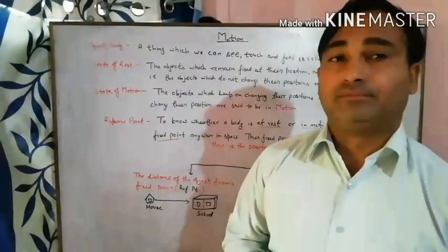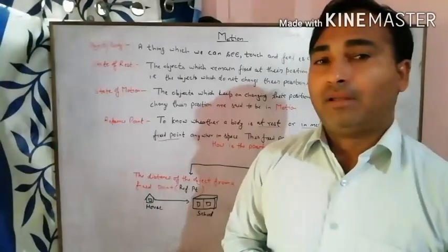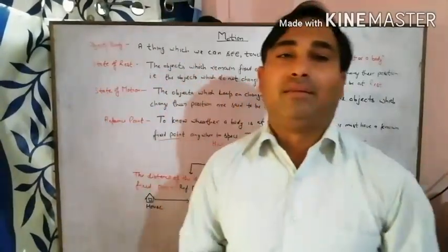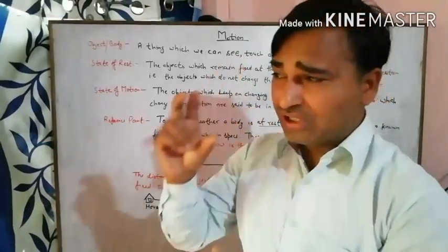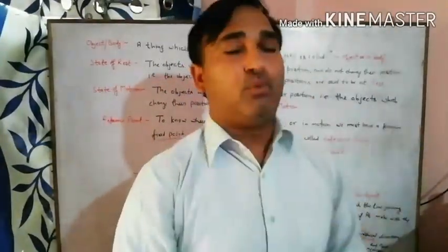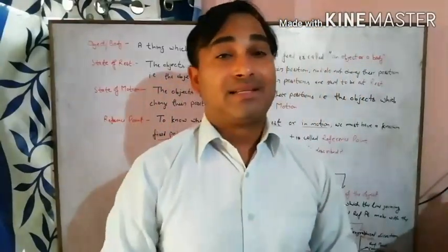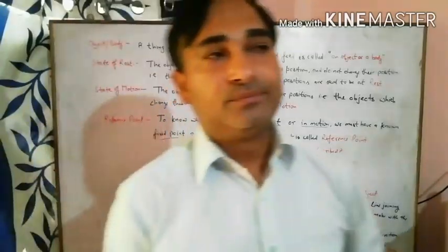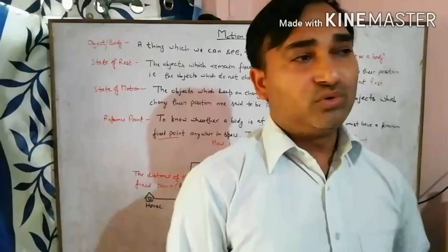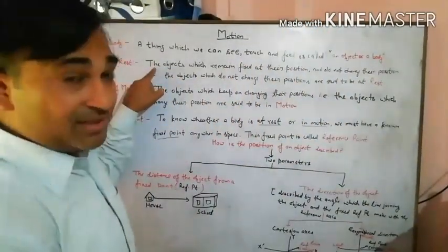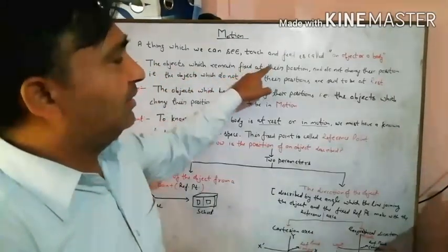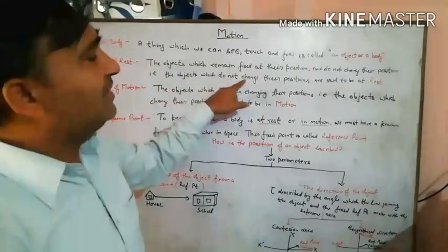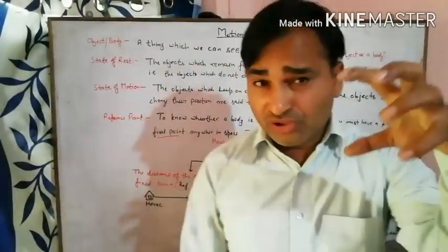Next, how do you know whether a body is in rest position or in motion? State of rest: the objects which remain fixed at their position and do not change their position are said to be at rest. If your position is not changed, if you don't change your position, then we say you are in rest position.